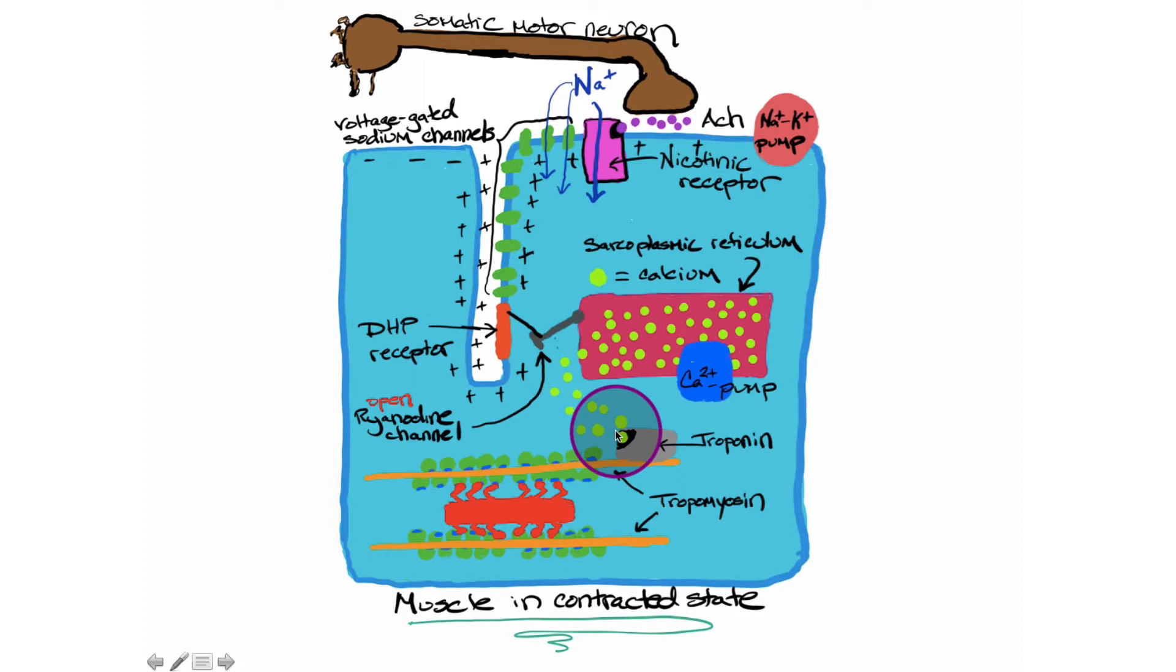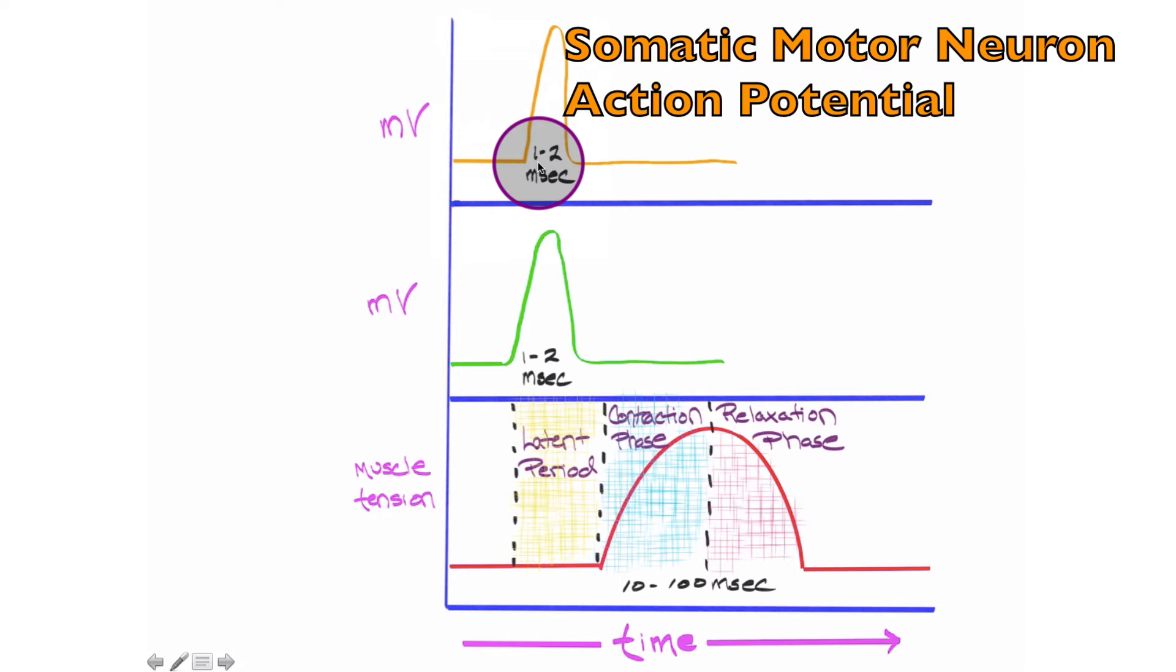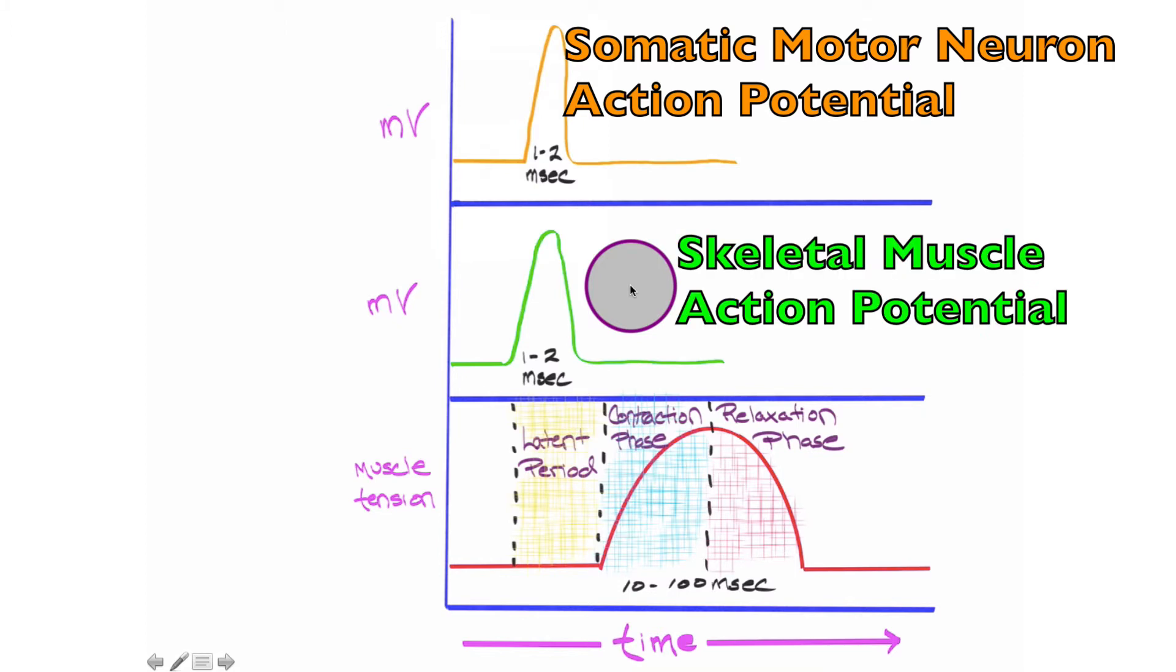What I'm showing in this slide are three different things. This top graph is the action potential of a neuron, which takes about one to two milliseconds. The middle graph is the action potential for a skeletal muscle fiber.